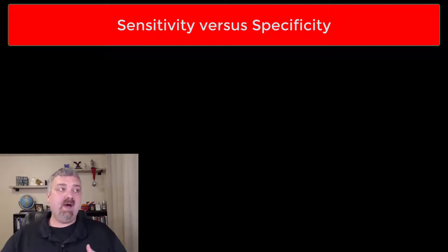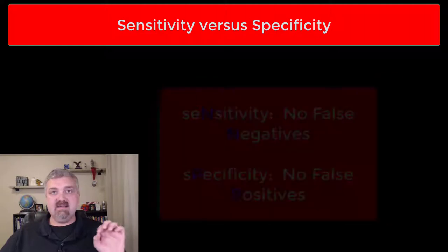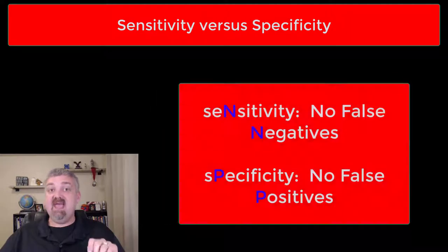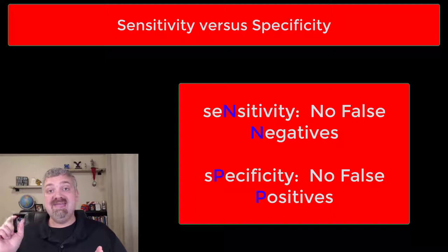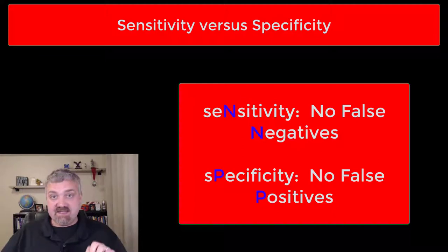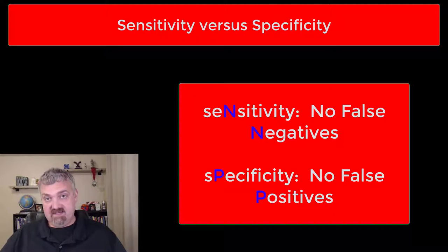Here's how I remember them quickly — a little mnemonic device. Sensitivity has an N in it, so I think: no false negatives. Specificity has a P in it, so I think: no false positives.